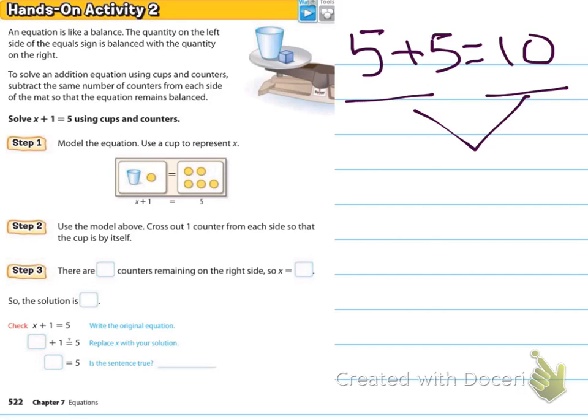So it says solve x plus 1 equals 5 using cups and counters. And so for the x, we're going to use a cup. And for the plus 1s, the 1s values, we're going to use these little yellow circles. So it says model the equation. Use a cup to represent x. And then our 1s are our circles. It says use the above model. I'm on step 2 here. Cross out one counter from each side so that the cup is by itself. So if we got rid of that one, we'd have to get rid of this one as well. Now, step 3. It says there are blank counters remaining on the right side. So x equals blank. I'd like you to look at this and figure out how many counters are remaining on the right side. If I got rid of the 1, we have 4 remaining.